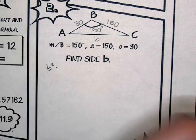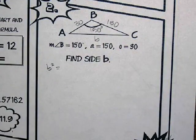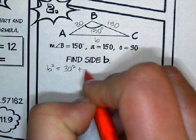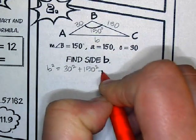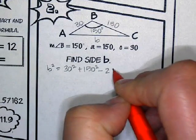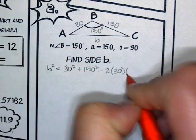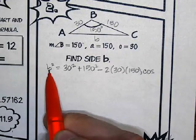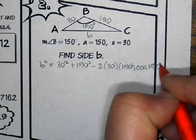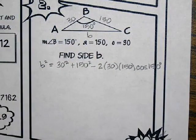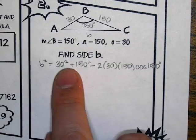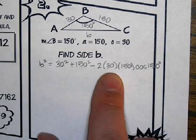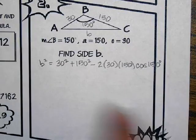I'm just going to follow the general pattern of the law of cosines. Law of cosines says take the two sides and add them together squared. So 30 squared plus 150 squared, minus 2 times the two sides multiplied together — 2 times 30 times 150 — times cos of the angle that's across from this side. So the two sides squared added together: you could have written 150 squared plus 30 squared, the order doesn't matter. And then cos 150.